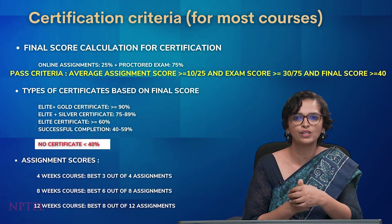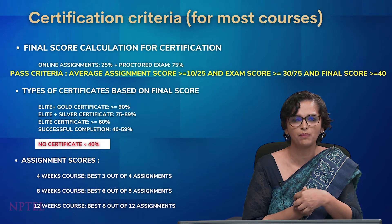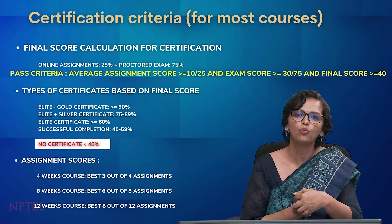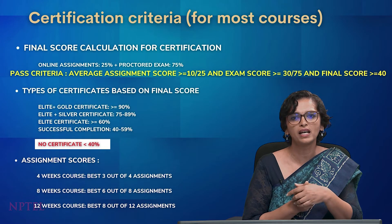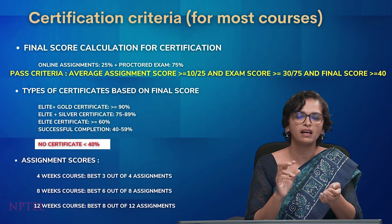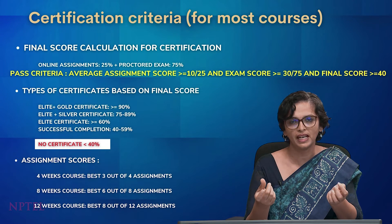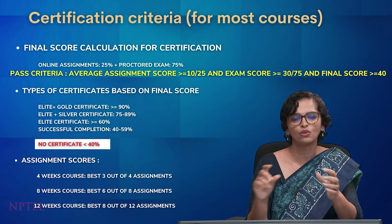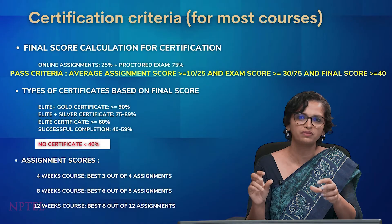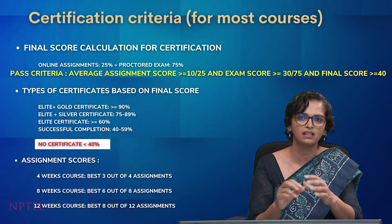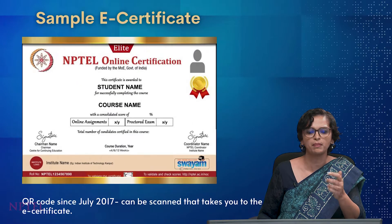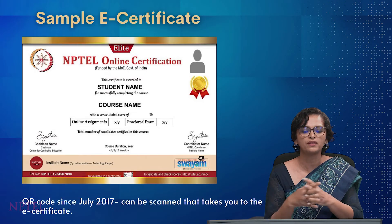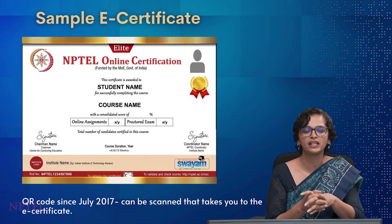There are also types of certificates based on your final marks. If you score between 40 and 59, the certificate says 'successful completion of the course.' Let me show you the certificate format — this is the format of the certificate we give.